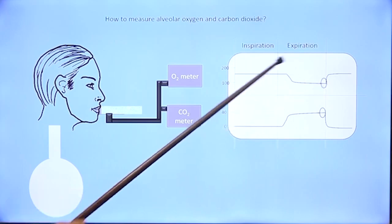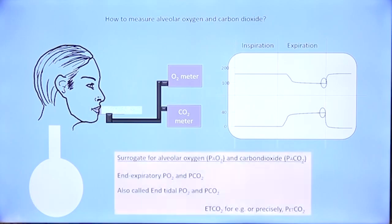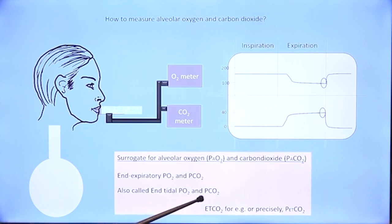In the last part of exhalation, the values on both the oxygen meter and carbon dioxide meter represent alveolar gas concentrations. That is the way we estimate alveolar carbon dioxide and alveolar oxygen. Note that it is totally a non-invasive procedure. It is called end-expiratory PO2 or end-tidal PO2, and end-tidal PCO2. EtCO2 is another term for end-tidal carbon dioxide, and it is a surrogate for alveolar carbon dioxide.